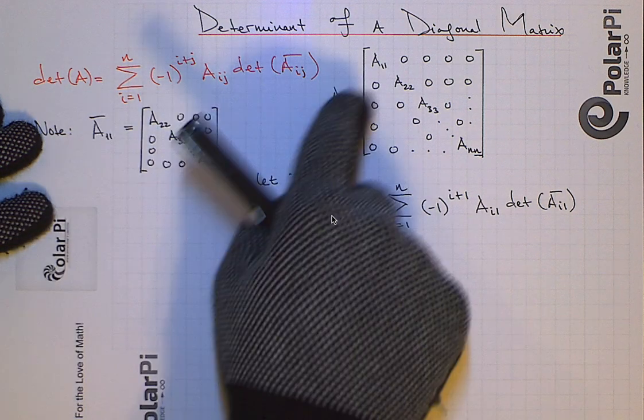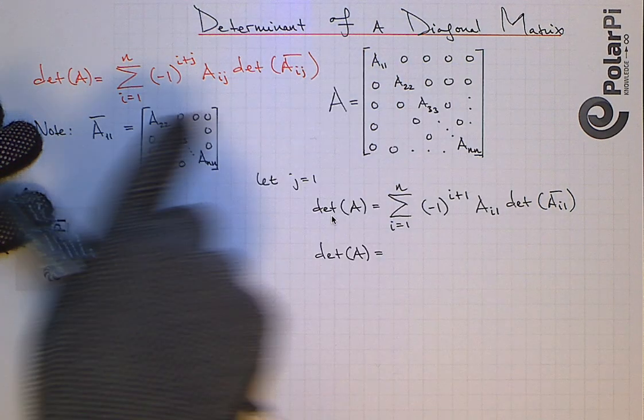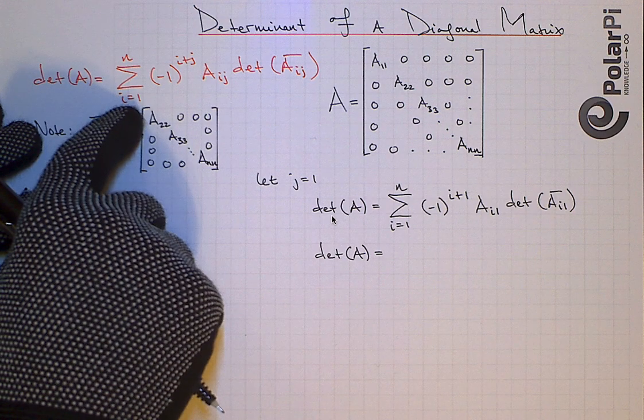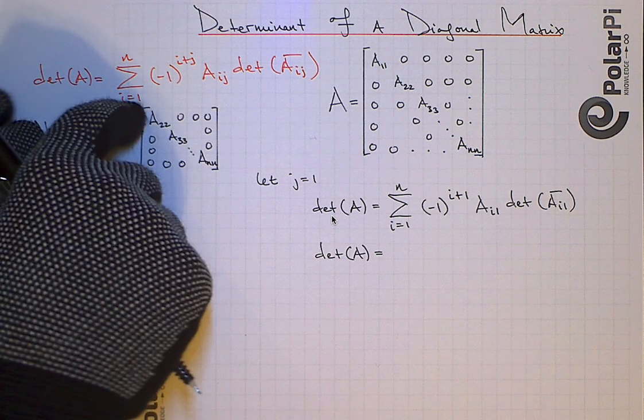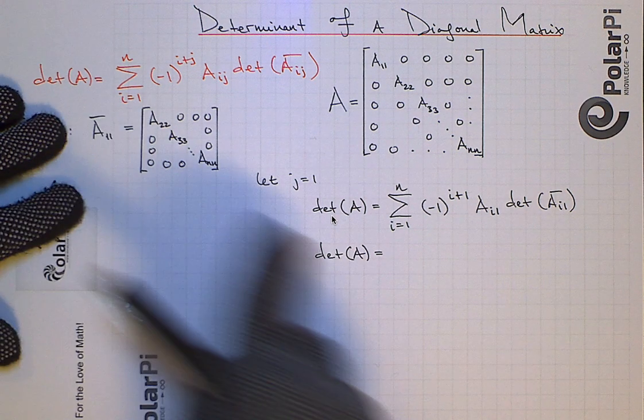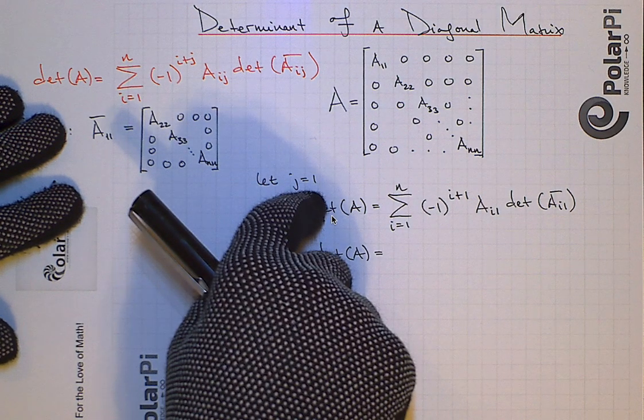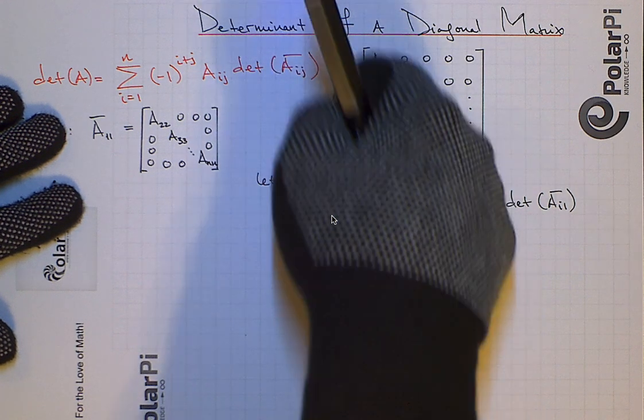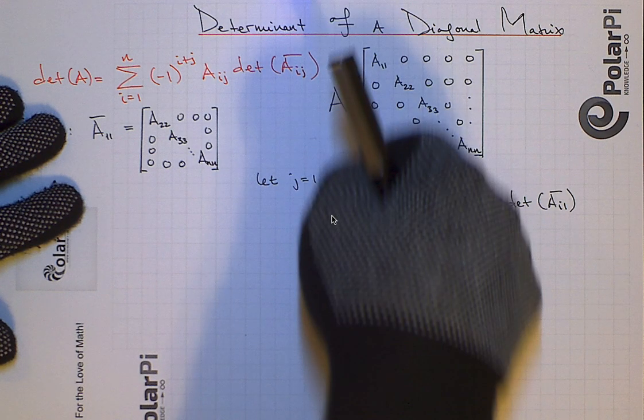If you wanna add along columns by fixing rows, you just change that i into j and that's all that's required. Now, as I said, we have to fix a column. So, you know, I've just fixed the first column. Why not, right? So we're gonna add along rows by fixing this column.